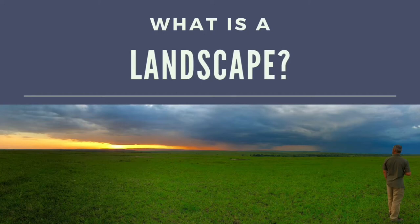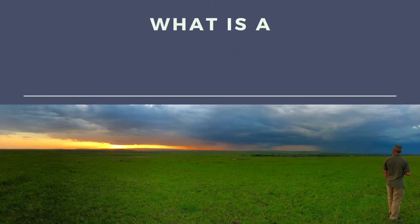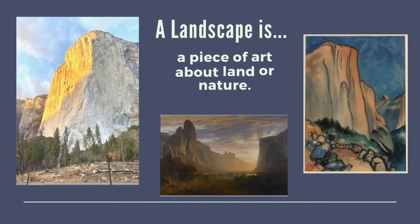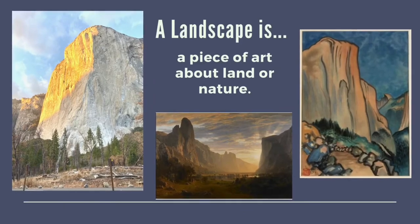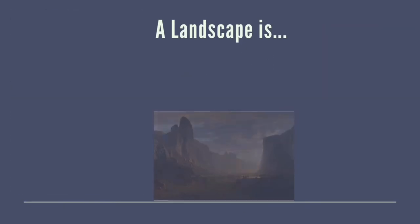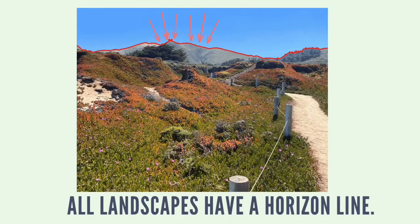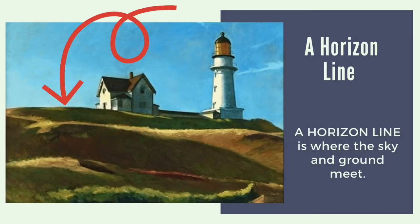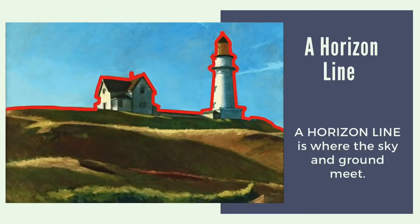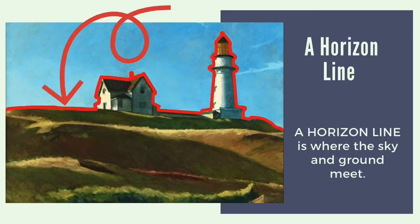What is a landscape? Landscapes are artworks that focus on land or nature. All landscapes have a horizon line. The horizon line is the place where the sky and the ground meet.